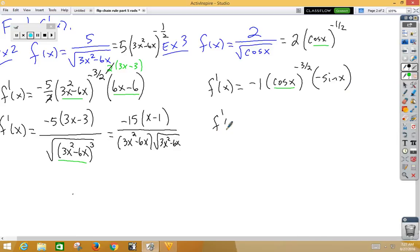Let's clean that up a little bit. We have a double negative, which is going to make a positive. We're going to leave our sine x on top. Our bottom is again square root of cosine cubed x. We could bring out a cosine, so we have sine x over cosine x root cosine x.